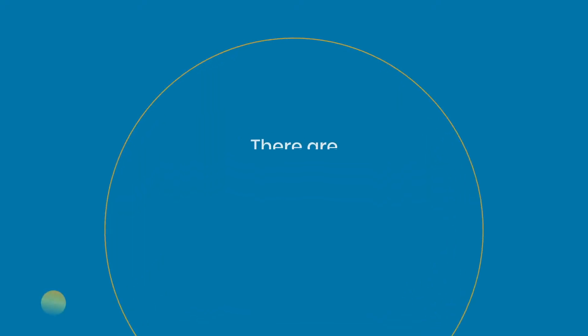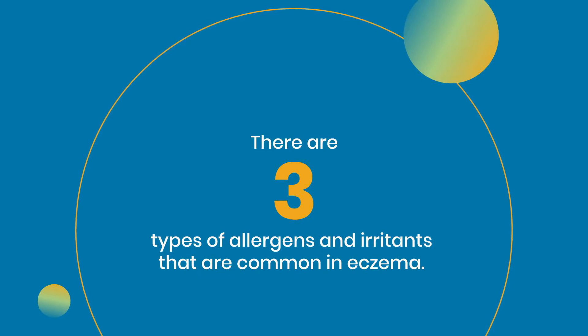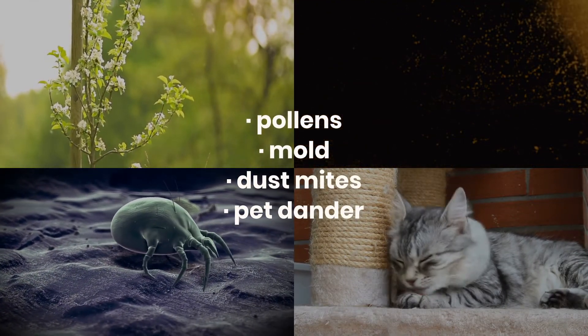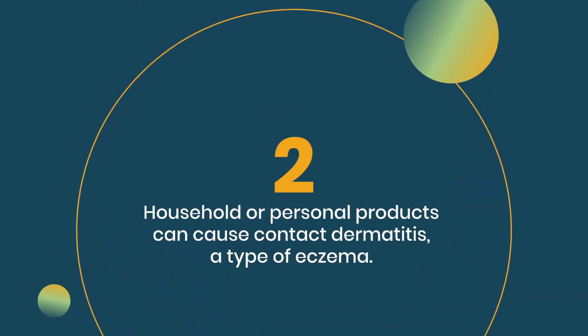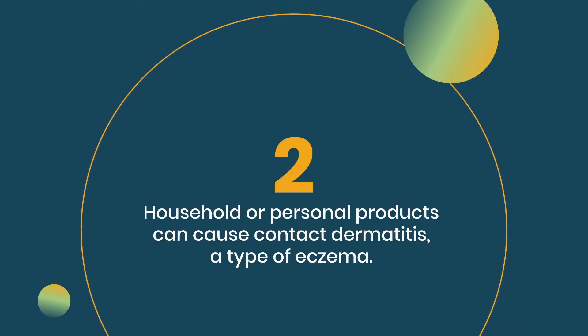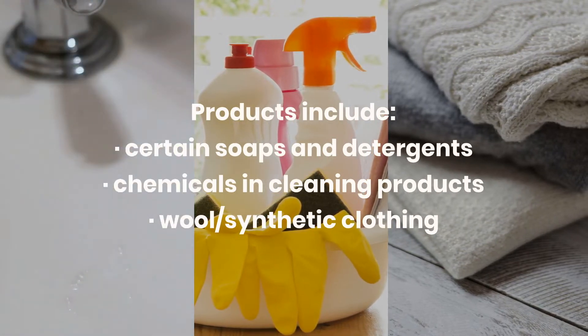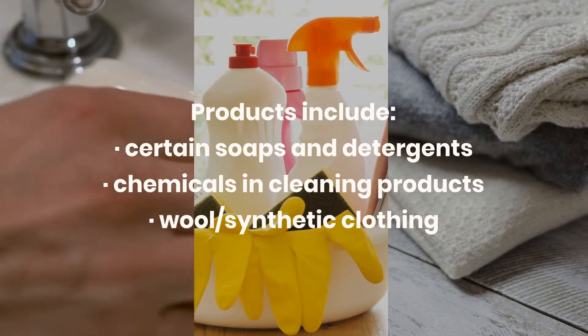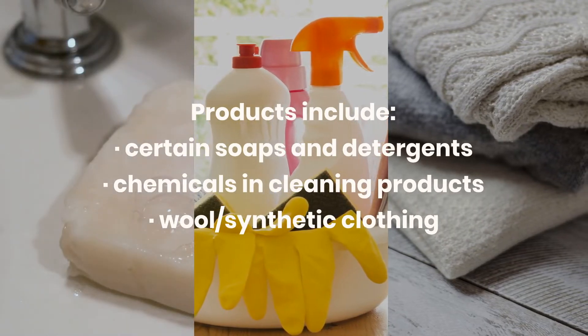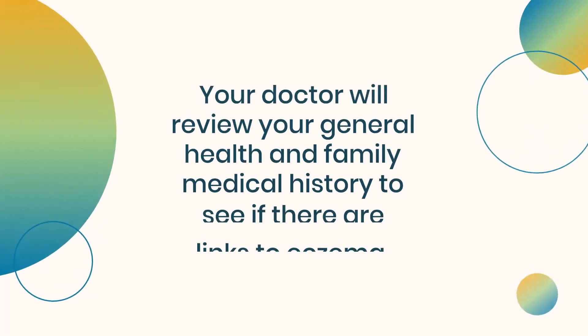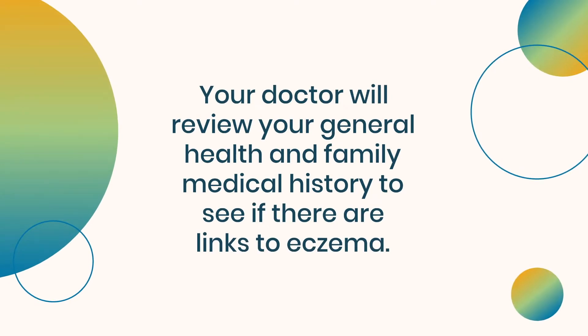It's important to get a clear diagnosis of eczema and what causes your symptoms. There are three types of allergens and irritants that are common in eczema. Environmental allergens such as pollen, mold, dust mites, and pet dander. Household or personal products can cause contact dermatitis, a type of eczema — products include certain soaps and detergents, chemicals in cleaning products, and wool or synthetic clothing.